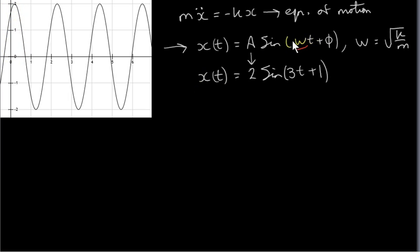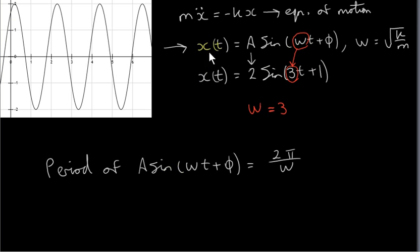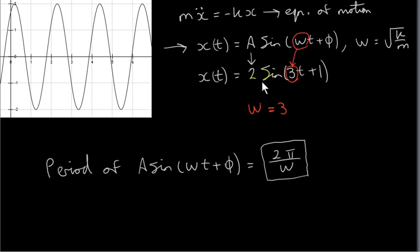Now let's look at the meaning of ω. For this function, ω is 3. The position x(t) is a periodic function. The period of the sine function is given by 2π over the coefficient of t, so it's 2π over ω — this is an important formula. For our example, the period is 2π over 3, so the period is two-thirds π.